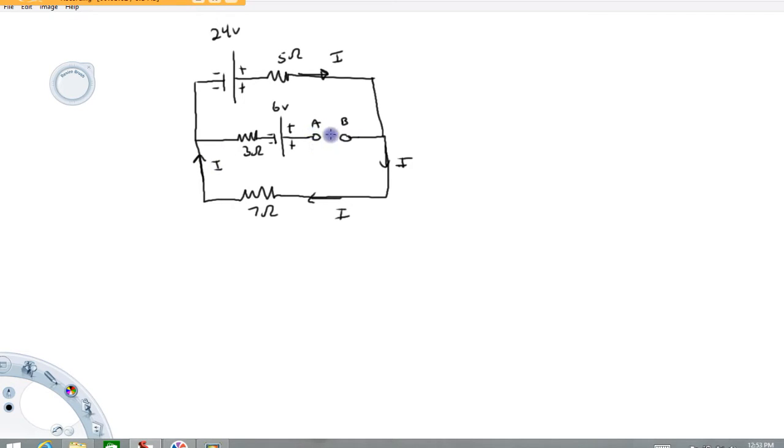One thing to realize, this is not connected, so we can't have any current in this branch because the charge doesn't have anywhere to go. Same thing here, this is not connected right here, so there can't be any current in this branch. This problem really only has one current in it.